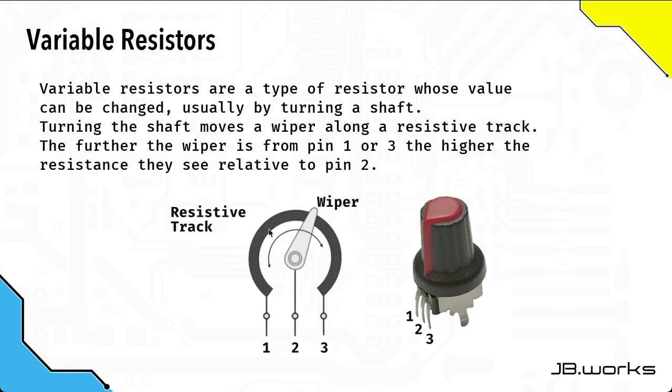So by changing the position of the wiper on the resistive track you change the resistance between either one and two and two and three. That's how variable resistor works and in our circuit it's going to help us control the amount of current that gets to the LED.